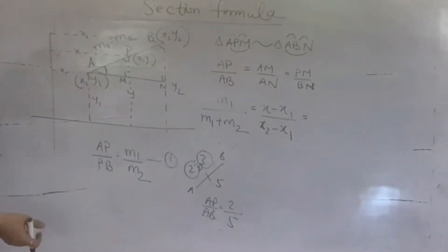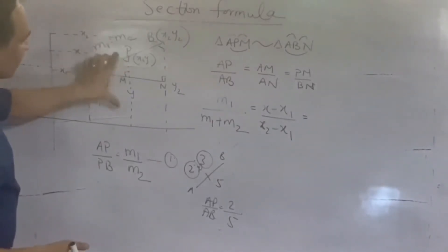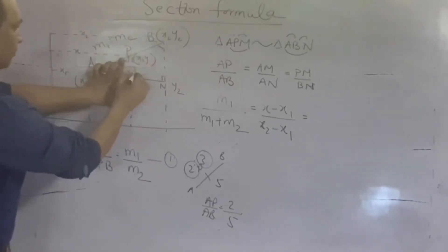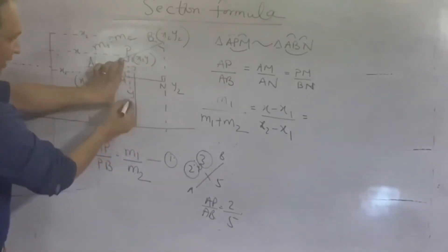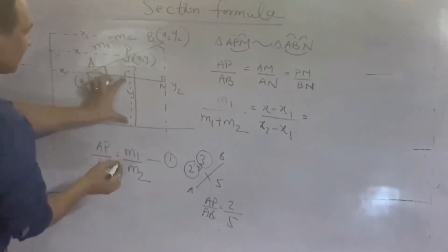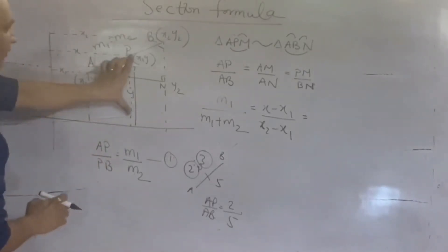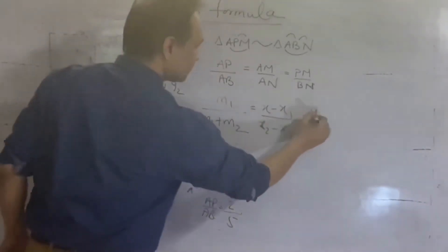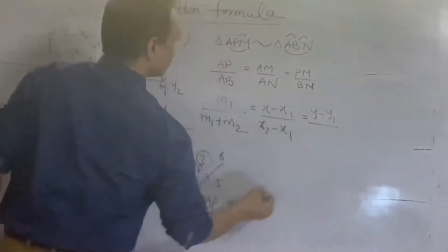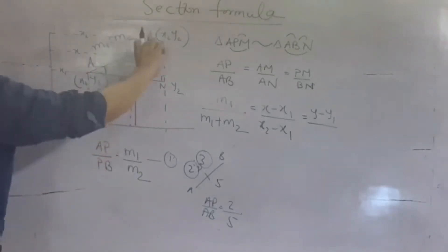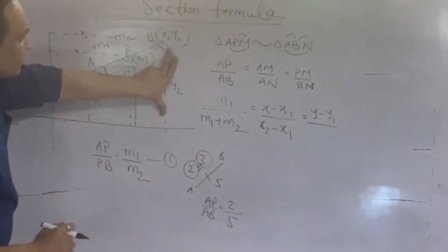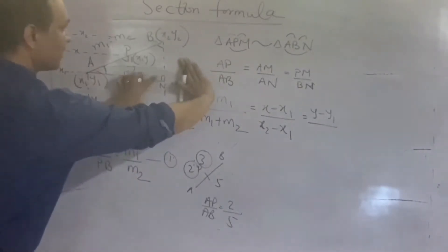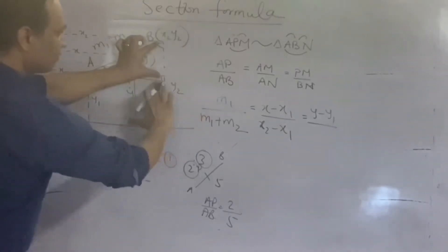PM देखना है — P की height Y है, नीचे वाला portion Y1 है, तो PM = Y minus Y1। BN देखना है — B की पूरी height Y2 है, उसमें से Y1 minus करें तो BN = Y2 minus Y1। अब तीनों ratios equal हो गए।